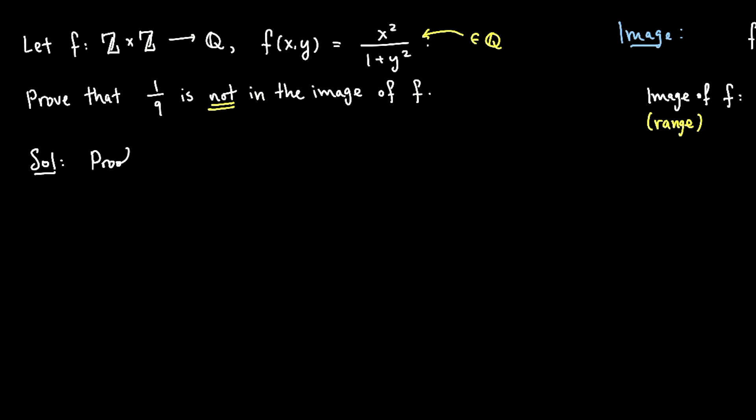Solution: Prove by contradiction. And to set it up, I suppose that 1 over 9 is in the image of f. So it's in the image f of the domain, which is Z cross Z in this case.